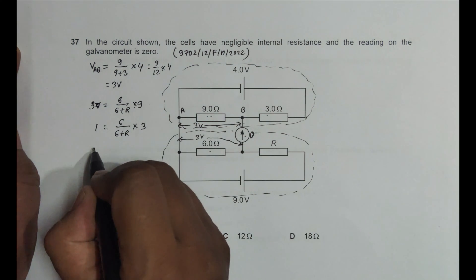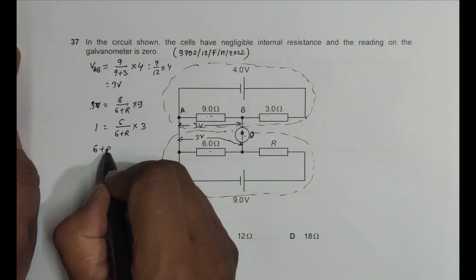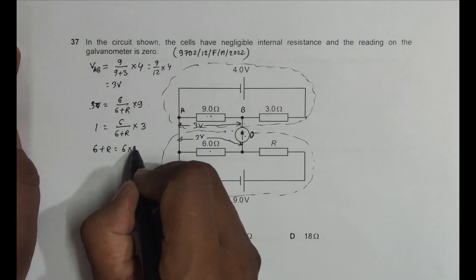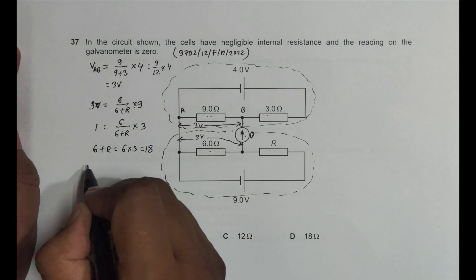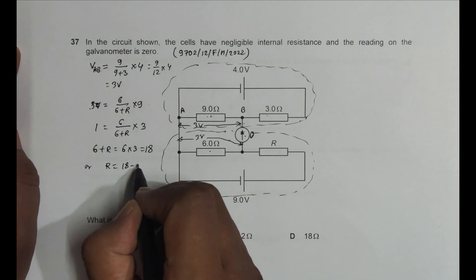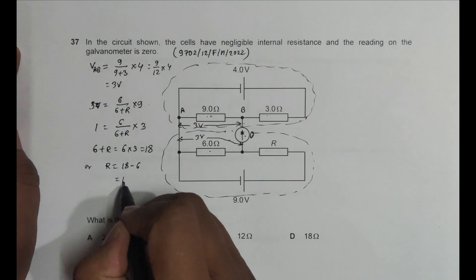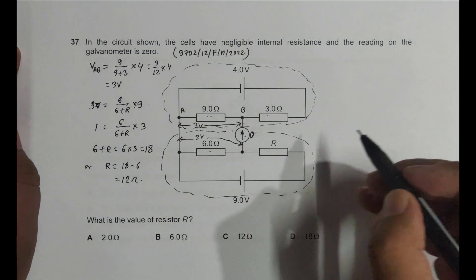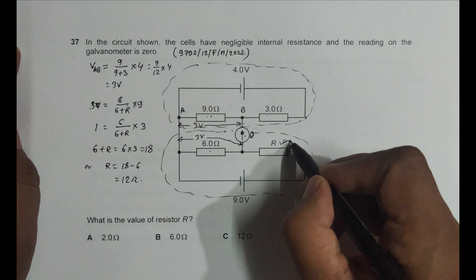So 6 plus R is equal to 6 into 3 equal to 18. So which gives us R is equal to 18 minus 6, that's equal to 12 ohm. So the value of this R is equal to 12 ohm.